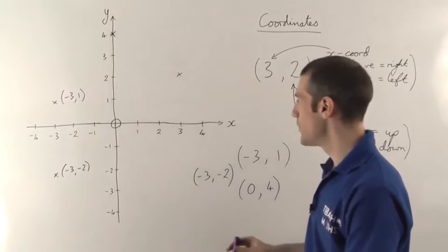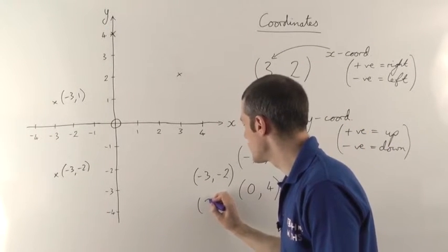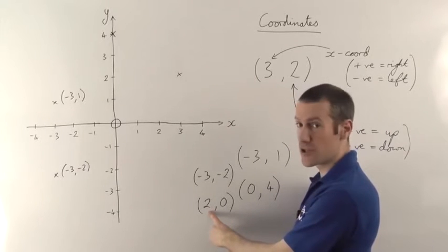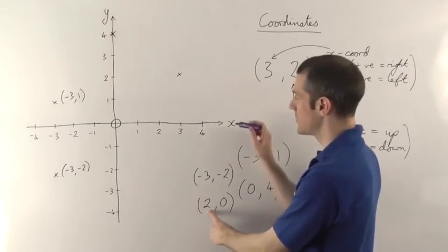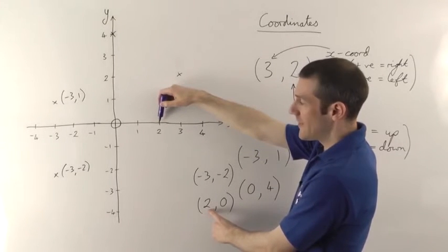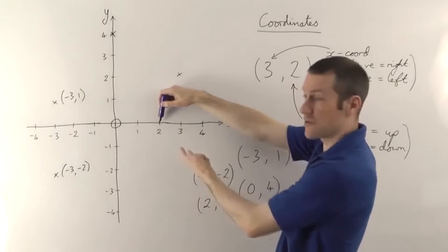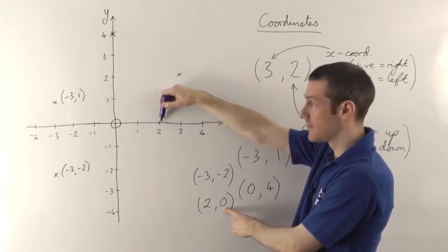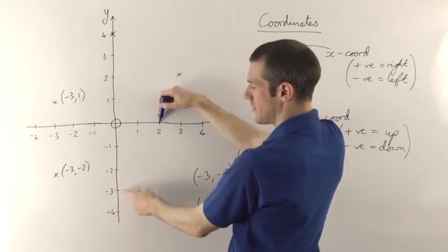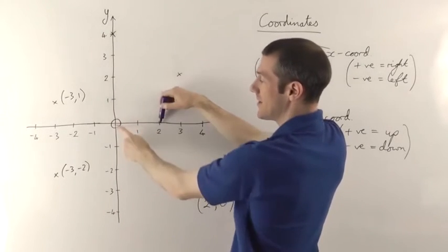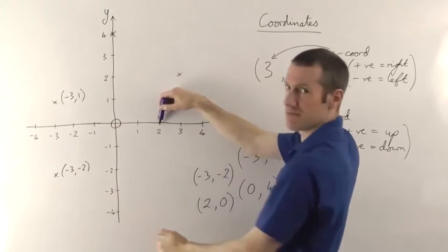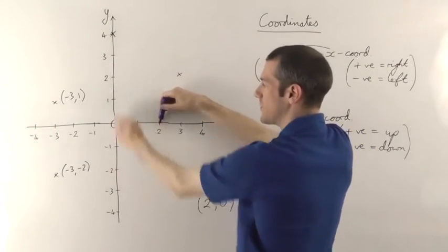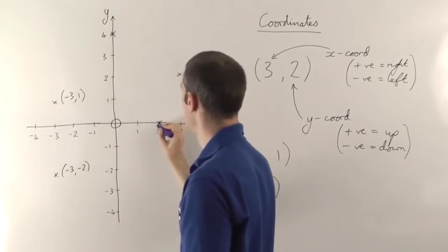All right, I'll do one more. Let's imagine we've got 2 comma 0. So this time, the x coordinate is 2. So from the origin, you go until you find 2 on the x. So you're going to go to here. So the left-right movement was 2. It's positive. So we went 2 to the right, where the positive numbers are. The y coordinate now, though, is 0. That means you don't go up or down. If you look at the y number line, minus 3, minus 2, minus 1, 0, 1, 2, 3, the 0 is there. So in terms of your up-down movement, how far you've gone, you actually haven't gone anywhere. You're at 0. You're at this point here in the up-down direction. So 2 comma 0 would be on that point there.